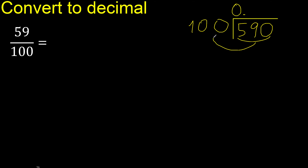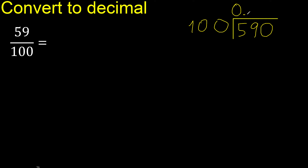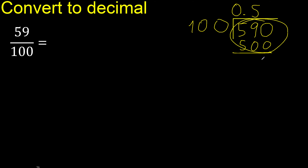590 is not less than 100. Multiplied by which number is nearest to 590, but not greater? 100 multiplied by 6 is 600 — that is greater. 100 multiplied by 5 is 500. Subtract: the result is 90.